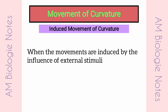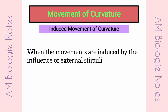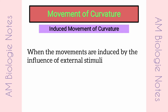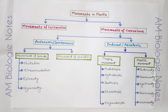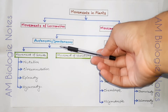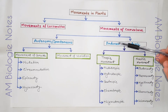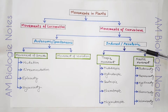First, we will see the definition of induced movements of curvature. When movements are induced by the influence of external stimuli, they are termed as paratonic or induced movements of curvature. In the last video, I had discussed about the different types of spontaneous movements of curvature in plants. Today, I will discuss about different types of induced movements of curvature.